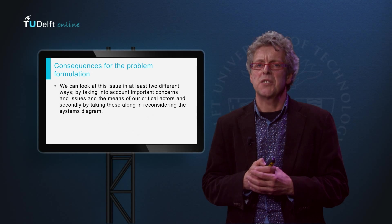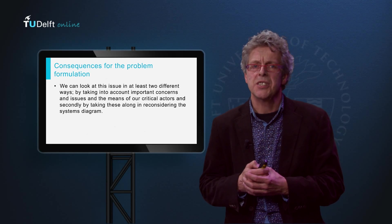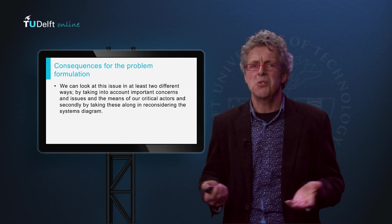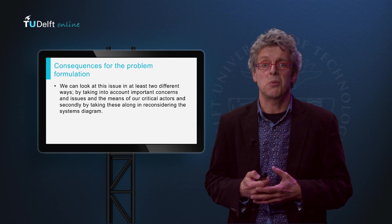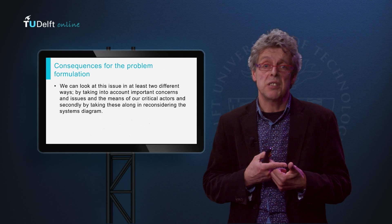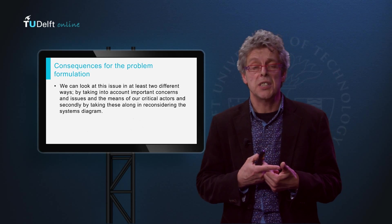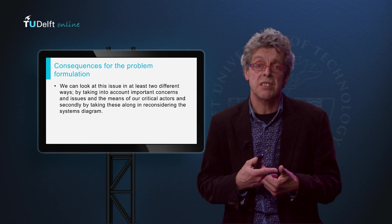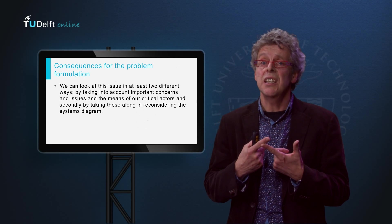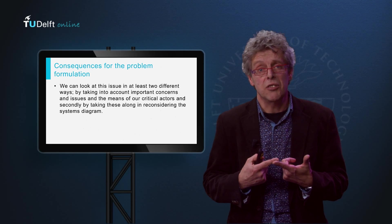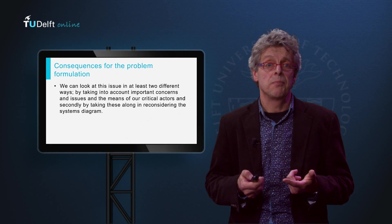What are the consequences for problem formulation? We can look at this issue in at least two different ways: by taking into account important concerns and issues and the means of our critical actors, and secondly, by taking these along in reconsidering the systems diagram.